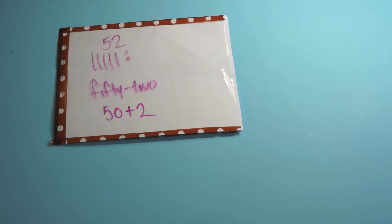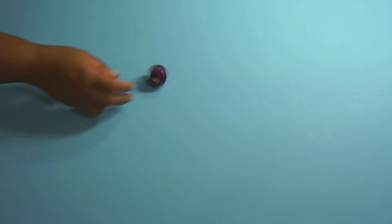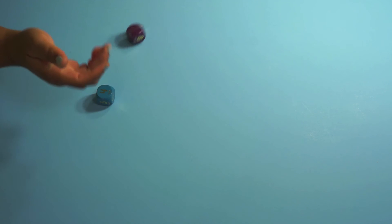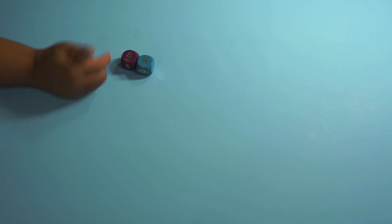So place value is huge in first grade. There's also these really cool place value dice and I got these at lakeshore. But you just roll and it tells you how many tens and how many ones and so they come in different colors.